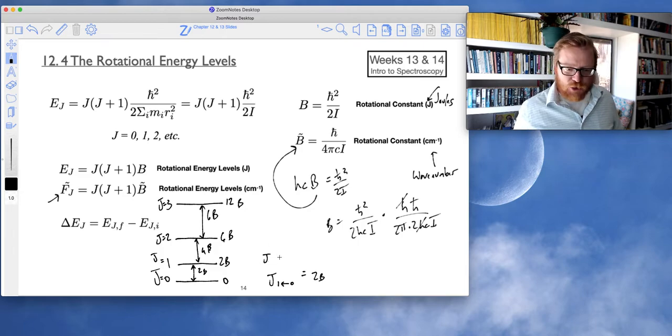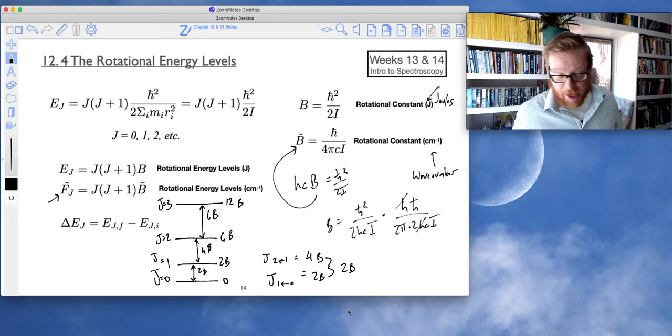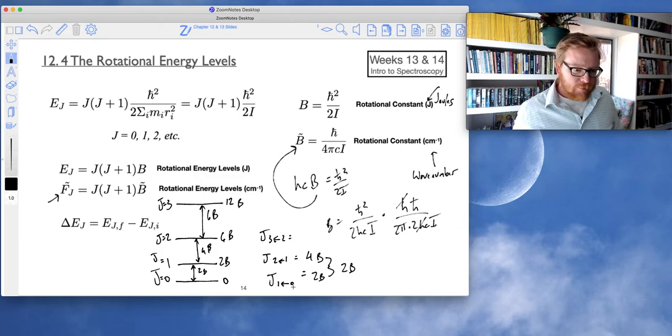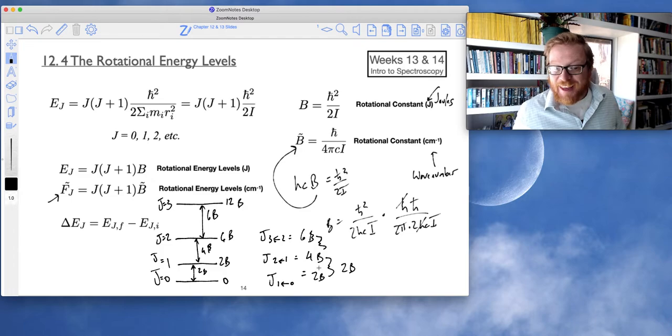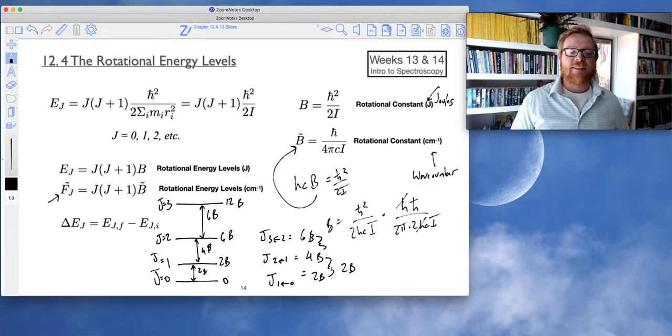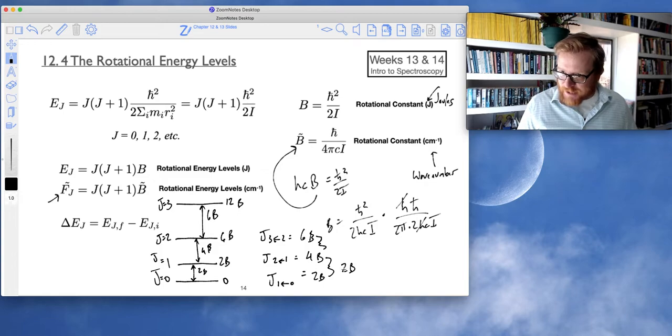Well, what about the j2, 1 state? Well, we know that that's going to be 4b. The difference between these two is 2b. So let's look at the next one, j3 to 2. And so we know that one is 6b. But look, the difference between these two is 2b. And if we were to keep going up, we would see this constant 2b difference, 2 times b, between each level.